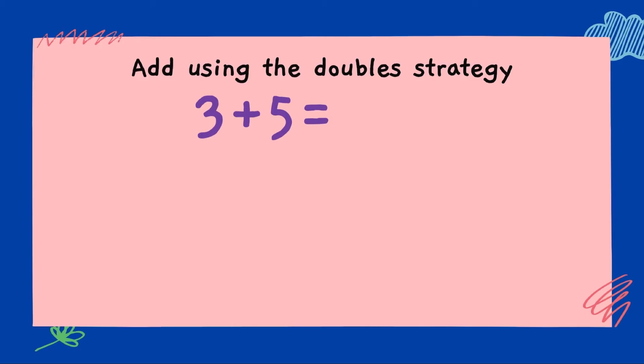3 plus 5. Which one is our smaller number? The 3. So, we'll split the 5 to 3 and 2. What is double 3? Double 3 is 6. 6 plus 2, 8. Isn't that easy? 3 plus 5 is 8.